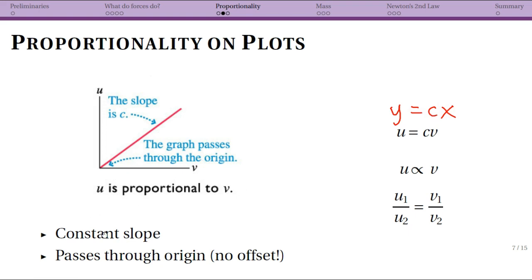And since c is a constant, your slope is constant. Notice that there's no offset. This must pass through the origin because there's no plus b or plus m, whatever you use. So it passes through the origin and this must be true for proportionality.